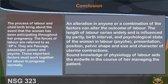Conclusion: the process of labor and childbirth brings about the event that a woman has been anticipating throughout her pregnancy. The forces of labor are referred to as the four Ps: passage, passenger, power, and psyche. These important factors must work together for labor to progress normally. An alteration in any one or a combination of factors can alter the outcome of labor. The length of labor varies widely and is influenced by parity, birth interval, and the psychological state of the woman in labor. Psyche, presentation, position, pelvic shape and size, and character of uterine contractions all play a role. Sound knowledge of the physiology of labor aids the midwife in managing her patients.